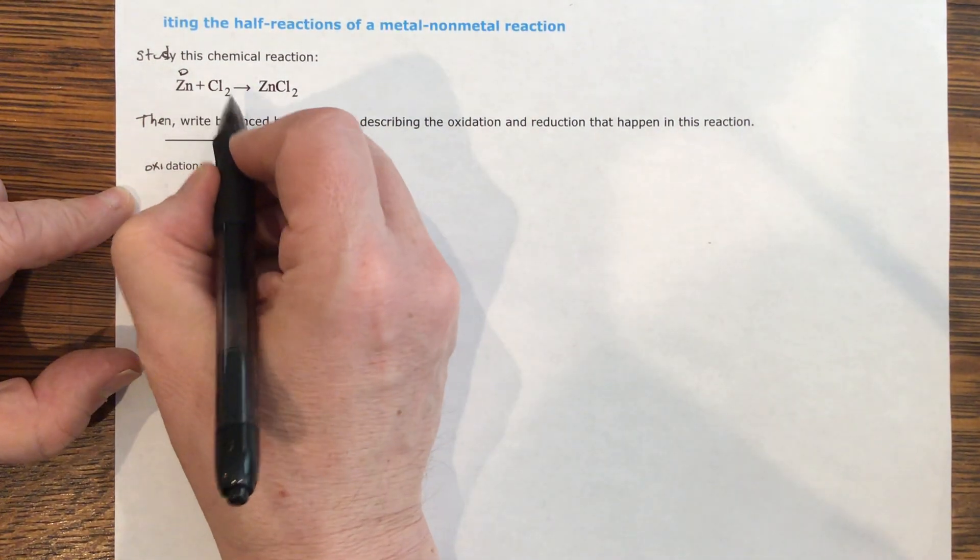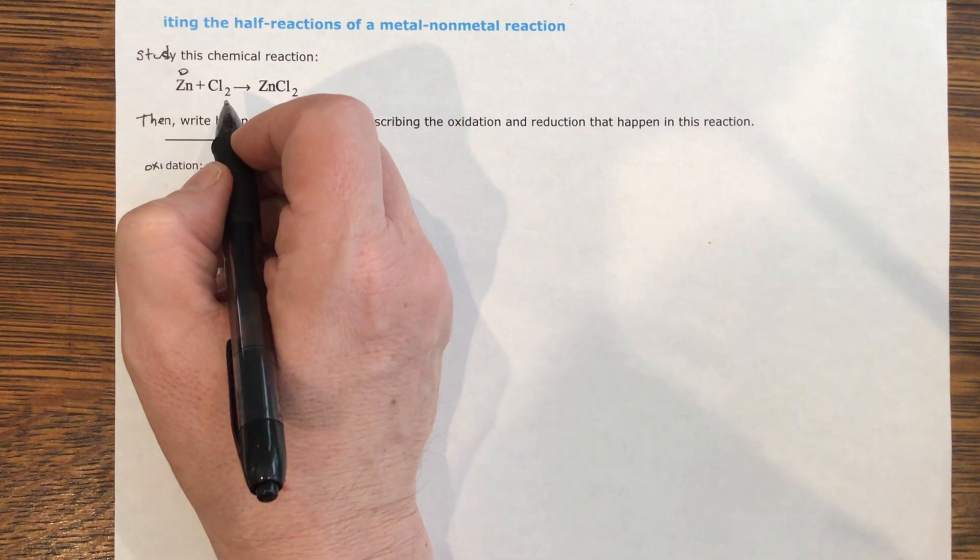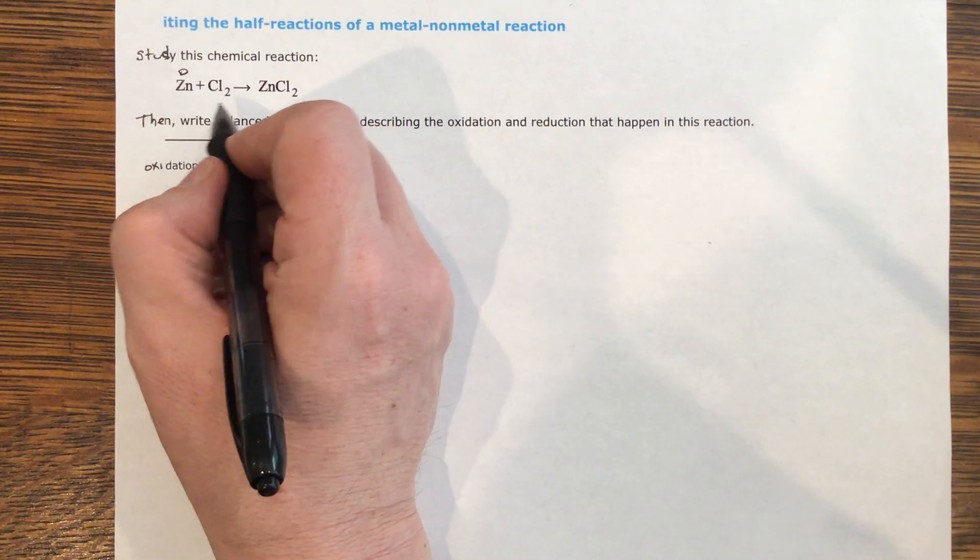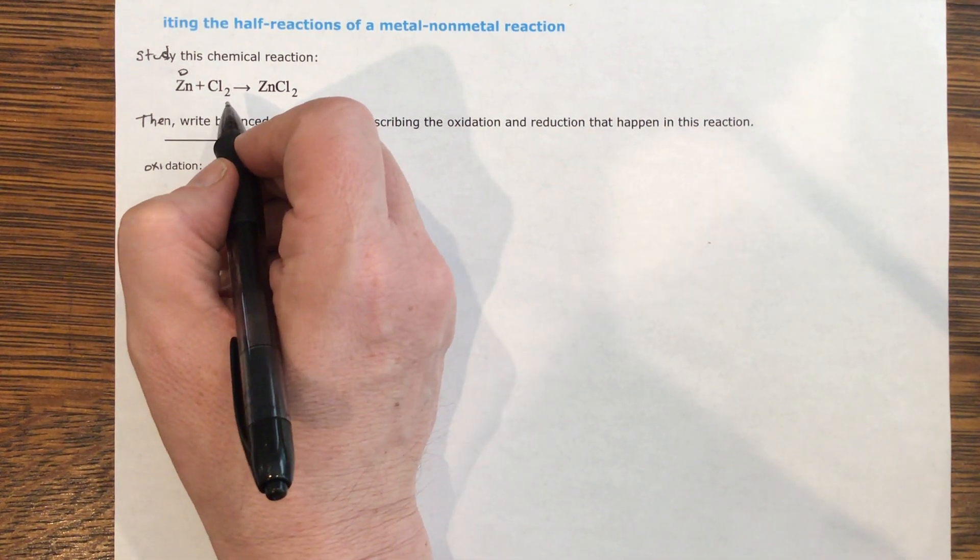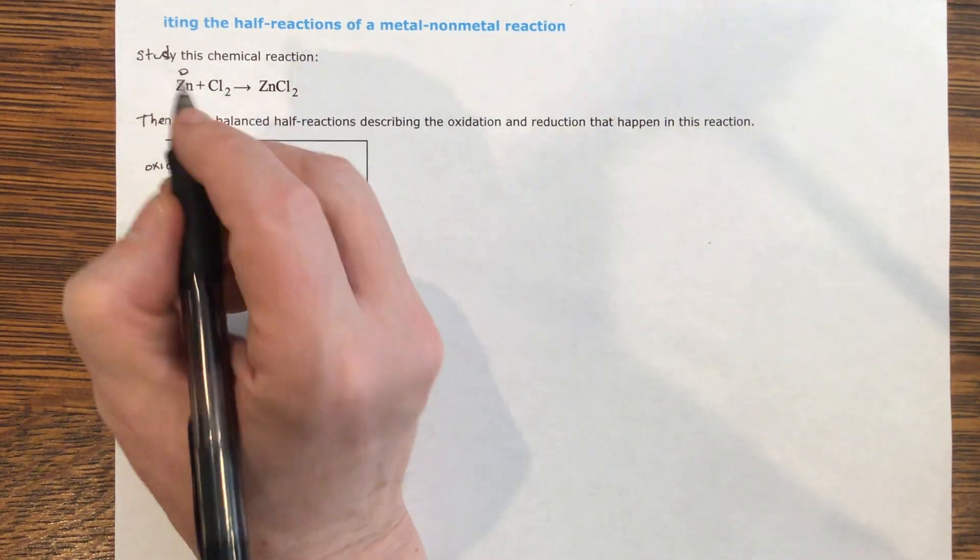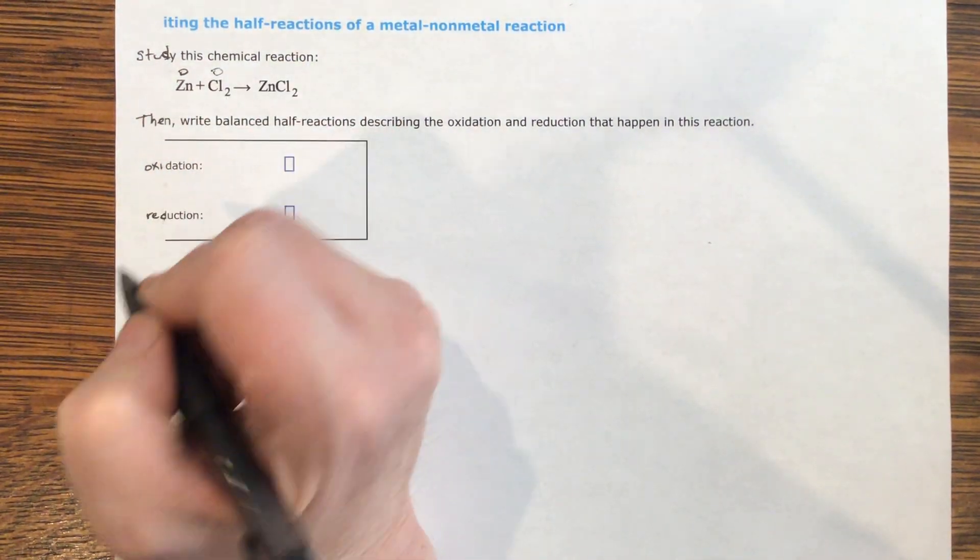Likewise, chlorine gas, Cl2, chlorine is a diatomic molecule. So whenever you see it in nature, it will be Cl2. Because this is the free state of chlorine, it has an oxidation number of zero.